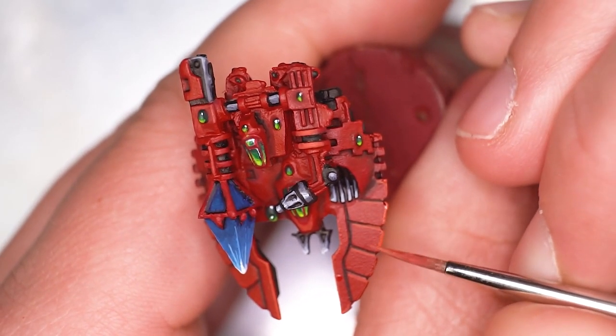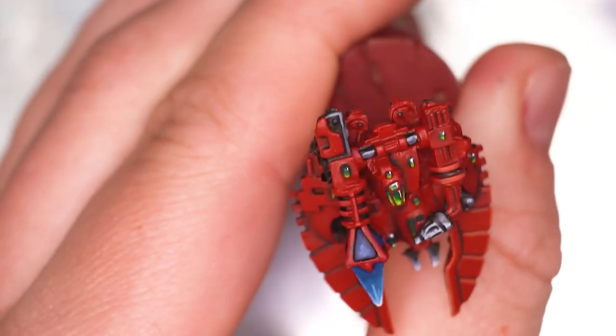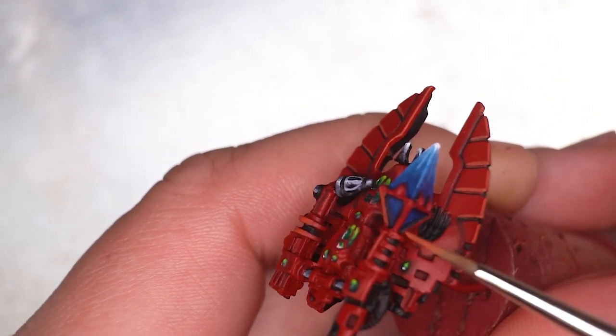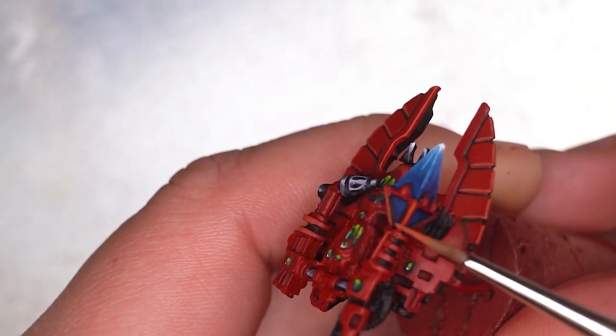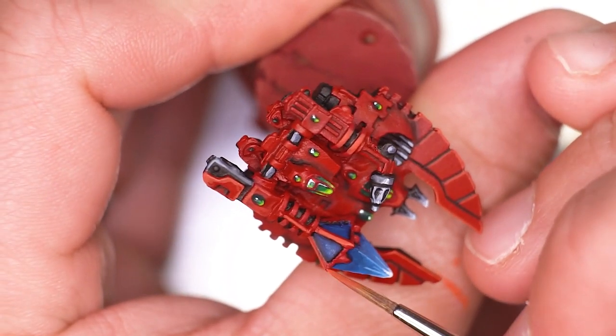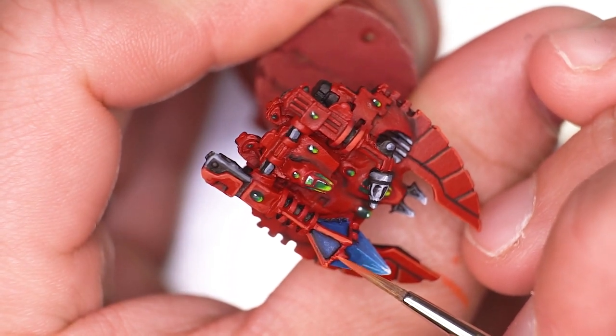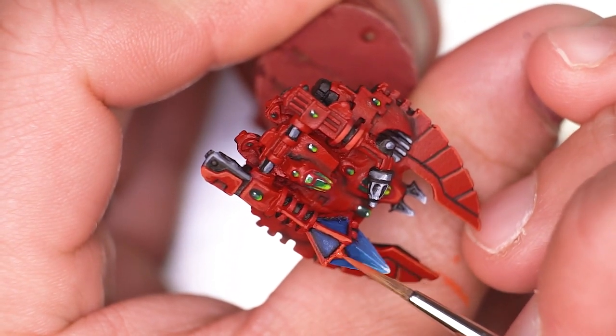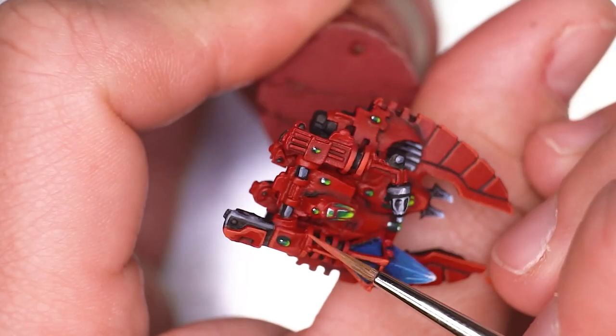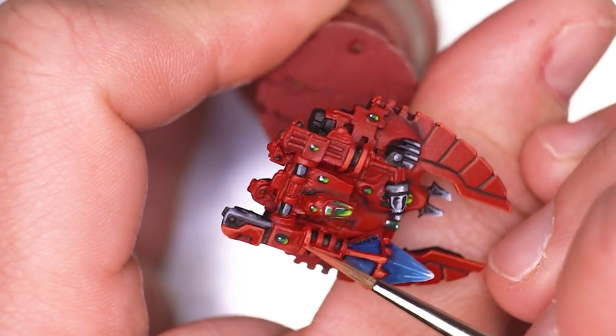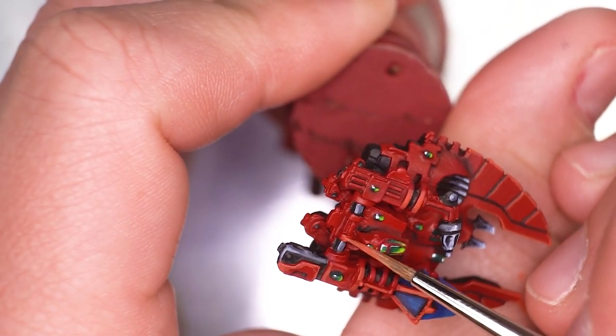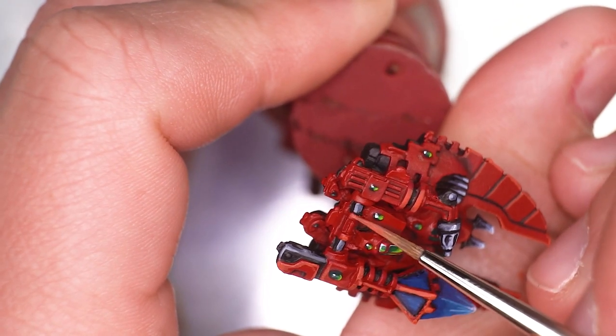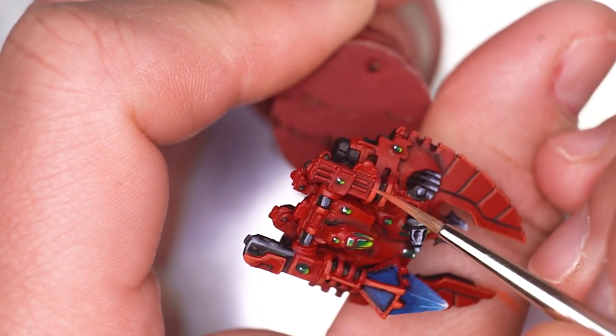Now I wouldn't edge highlight absolutely everything. I think it can start to look a little bit unrealistic if you do that. So just pick areas that you think could do with some edge highlighting and also make sure that if you are going to do the edge highlighting try and focus it in on the corners less so on the edges as a whole because if you've got a sort of a fat flat bar of paint across an edge it can look quite unrealistic but if you draw that edge highlight to the corners instead that can make it look a little bit more realistic.